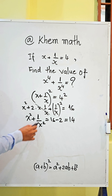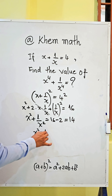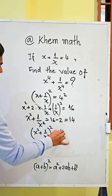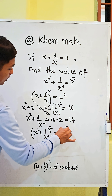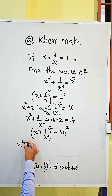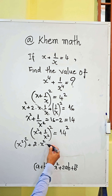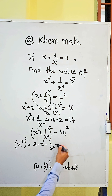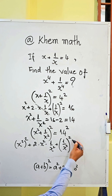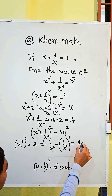Now we square this equation again. So we get (x² + 1/x²)² equals 14 squared. Here, we use the formula again. We get x⁴ plus 2 times x² times 1/x² plus 1/x⁴, which equals 14 squared, equal to 196.